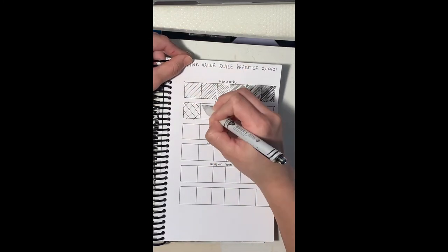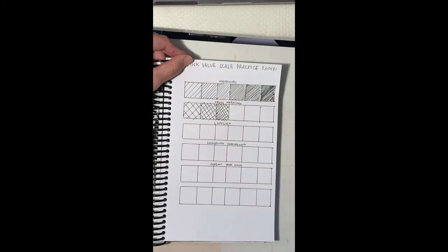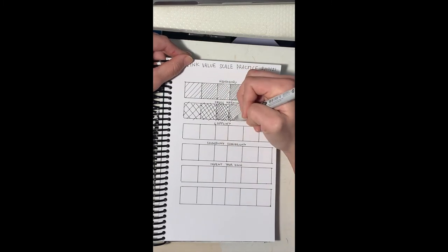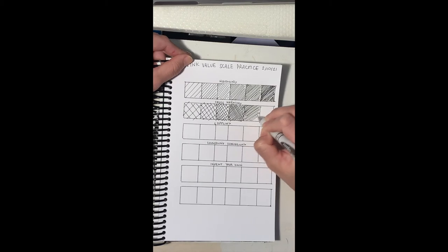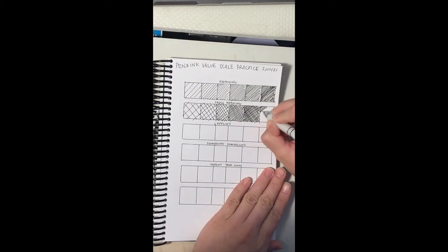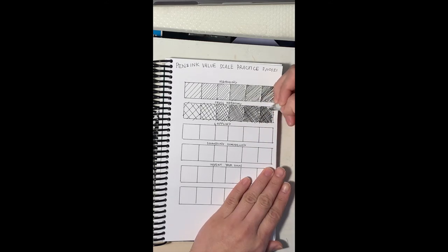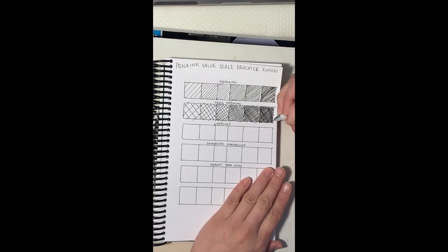Cross-hatching is very similar, but you go the opposite direction. I sped this up a little bit because it's very similar. You just add a set of lines the other direction so you can get darker values here. But this is very sped up. It took me about 20 minutes to do my whole sketchbook page.